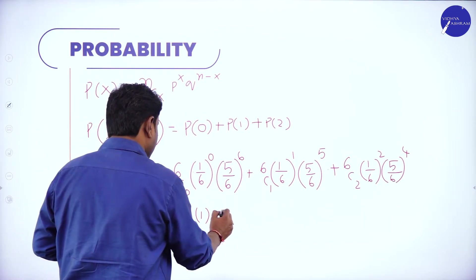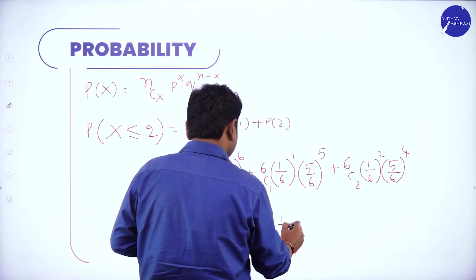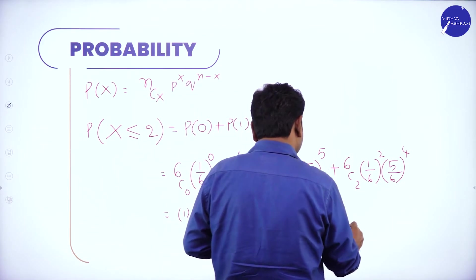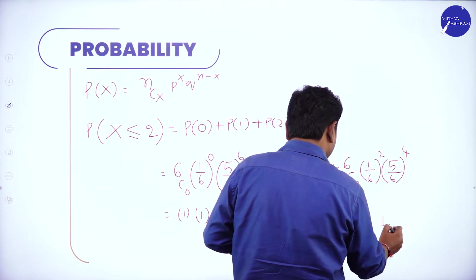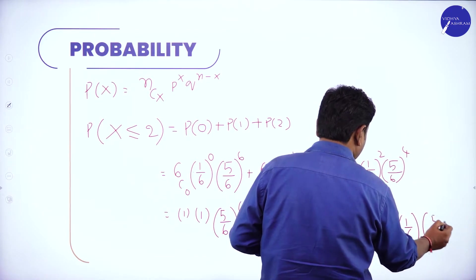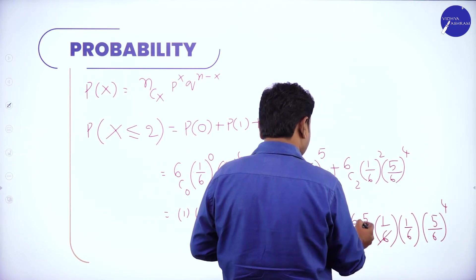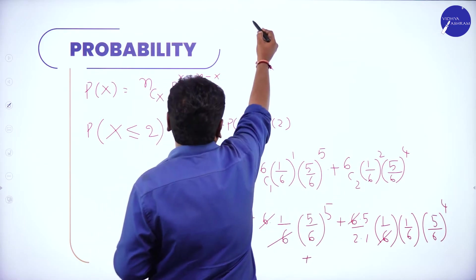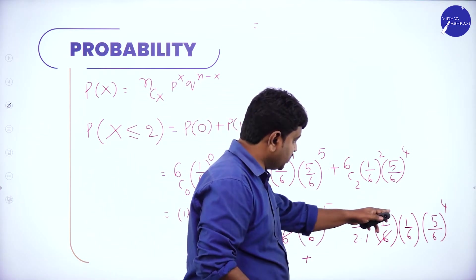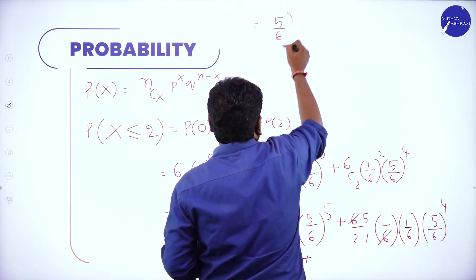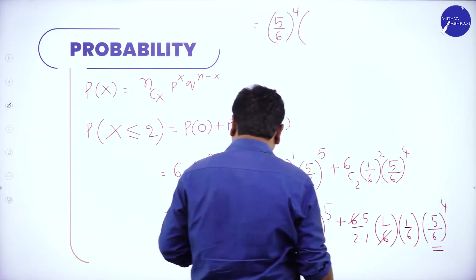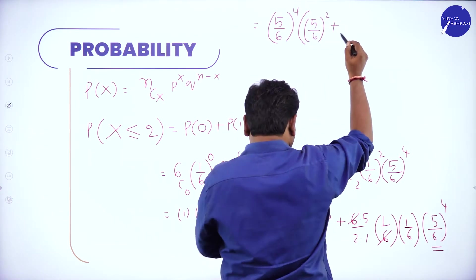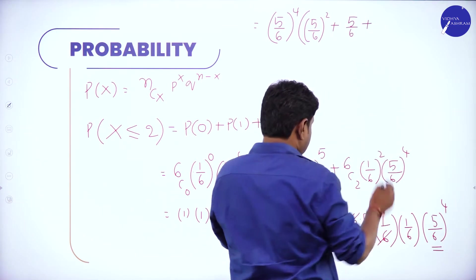Simplifying: 6C0 = 1 and (1/6)^0 = 1, giving (5/6)^6. 6C1 = 6, and 6 cancels with the denominator 6, giving (5/6)^5. 6C2 = (6×5)/(2×1) = 15; the two factors of 1/6 cancel partially, giving (5/12) × (5/6)^4. The least power common to all terms is (5/6)^4, which is factored out.